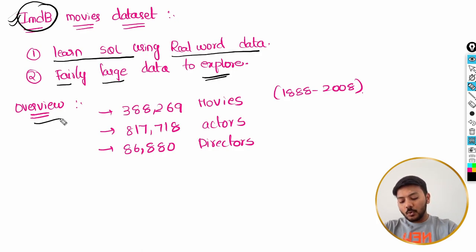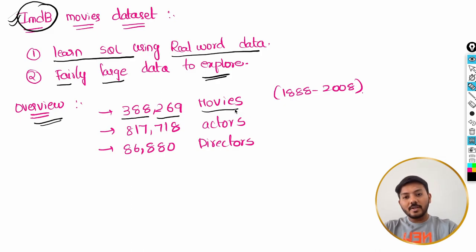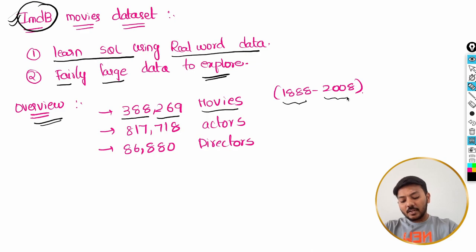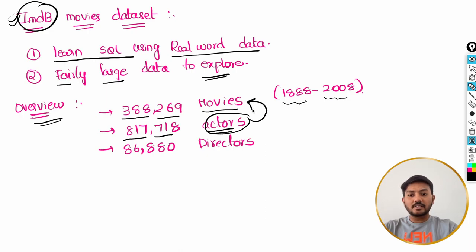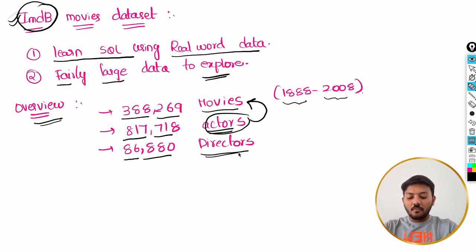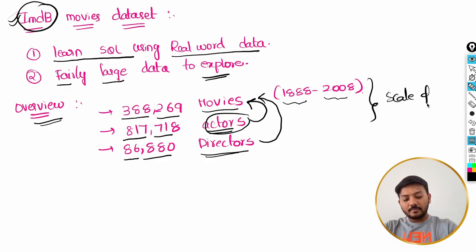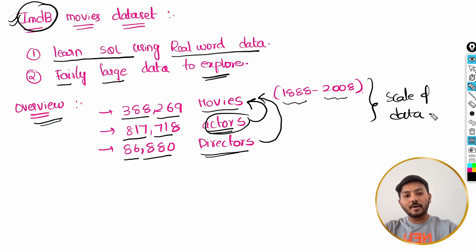To give you an overview of the dataset, we have approximately 388,269 movies ranging from 1888 to 2008. I know this is not the latest data, but it is for educational purposes only. We also have 817,718 actors and approximately 86,880 directors. This is a really huge amount of data, and this is what we use moving forward in our SQL series.